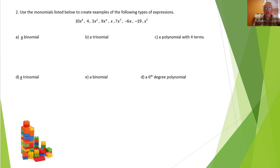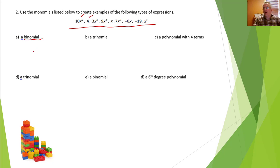Monomials are kind of like building blocks. We use them to build binomials and trinomials and in general polynomials. So here we have a whole bunch of monomials we can use as building blocks. To make a binomial — bi means 2 — which is the sum of two monomials, we can do 10x to the 6th, then add or subtract another monomial, like 4. So to build binomials and the other ones, we add and subtract monomials.